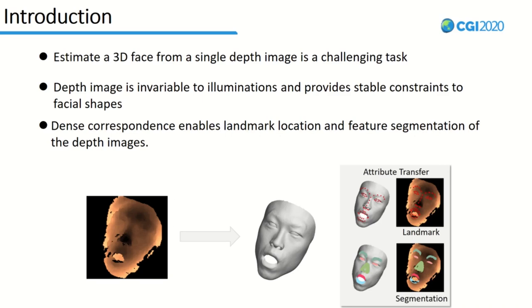Estimating a 3D face from a single depth image is a challenging task, considering the depth device noise and the various facial shapes due to deformations including pose and expressions. Most existing works rely on RGB or RGBD images to estimate the pose, identity, and expression parameters of the 3D face, where the facial texture in color images provides semantic constraints for facial features. For outdoor applications with uncontrolled illuminations, facial textures cannot act as constraints for semantic consistency in 3D face estimation. The depth image is invariant to illumination and provides stable constraints for facial shapes. Identifying the semantic correspondence from a single depth image is a cornerstone to fitting the 3D face with the depth image.